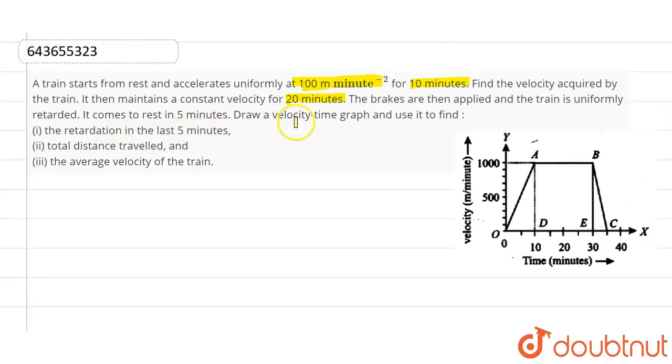Draw the velocity time graph and use it to find: first, the retardation in the last 5 minutes; second, total distance traveled; and third, the average velocity of the train.